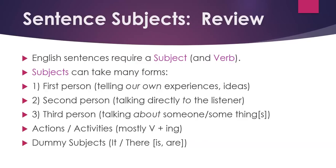Here's a review of sentence subjects. English sentences require a subject and a verb. Subjects can take many forms: first person — telling our own experiences or ideas; second person — talking directly to the listener; third person — talking about someone, something, or some things; actions or activities — mostly verb plus -ing forms used as subjects; and last, dummy subjects — the most common types are it and there, followed by is, are, or some other form of be.